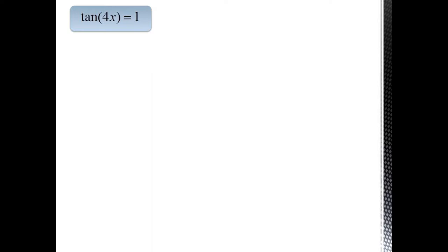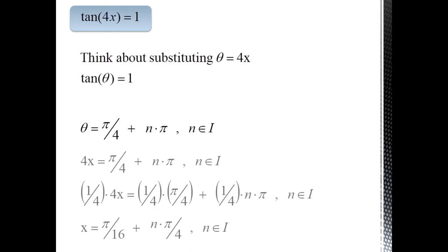So now consider the problem tangent 4x equals 1. You would not want to try to use identities to expand this out. Instead, we can easily let theta equals 4x and then solve tangent theta equals 1. This has the easy solution that theta equals pi over 4 plus n times pi. We only need n times pi because tangent has a period of pi. Now substitute back in 4x for theta and multiply both sides by 1 fourth. And we get x equals pi over 16 plus n times pi over 4.